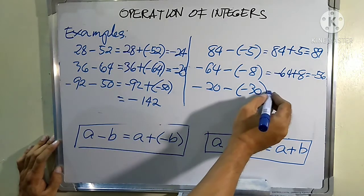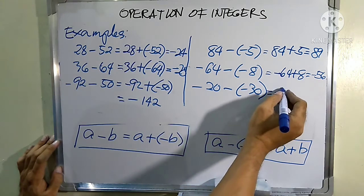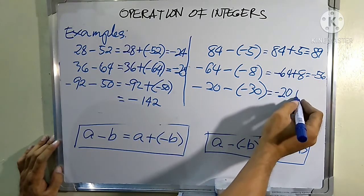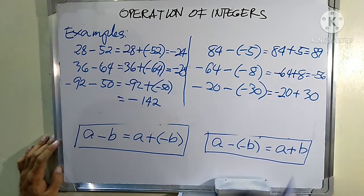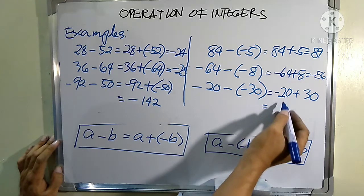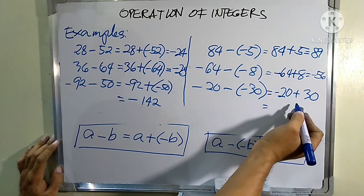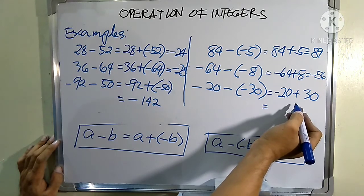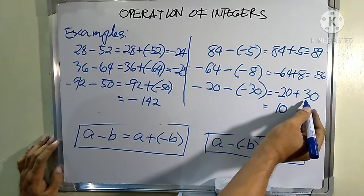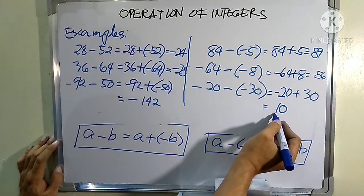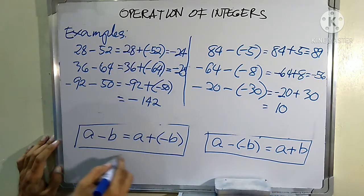Next: negative 20 minus negative 30. We rewrite this as negative 20 plus the opposite of negative 30, which is positive 30. We now have negative 20 plus 30 — they don't have the same sign, so we get the difference between 30 and 20, which is 10. Positive 30 is farther from zero, so our final answer is positive 10. That is how to use this rule.